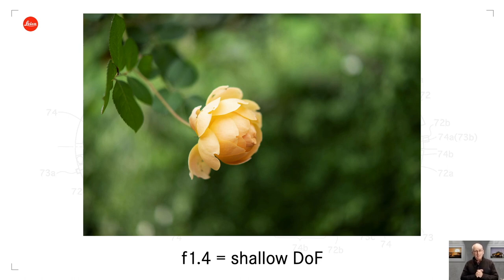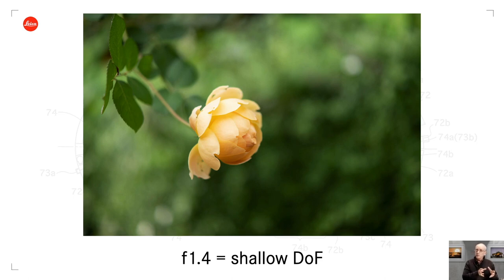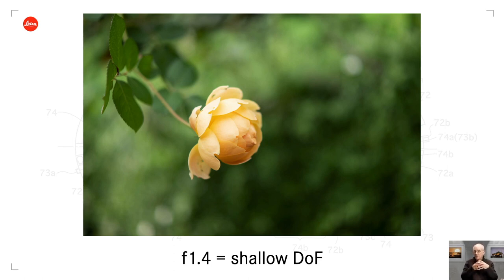Here's a rose — same messy background — but changing from f/11 to f/1.4 on the Leica CL with the 35mm Summilux makes it work beautifully. A viewer asks about the sharpest aperture — I'll come back to that. Another comment: depth of field is dependent on subject distance, which is absolutely true, and I'll do a full webinar on depth of field in August covering aperture, shutter speed, ISO, and exposure in more detail.